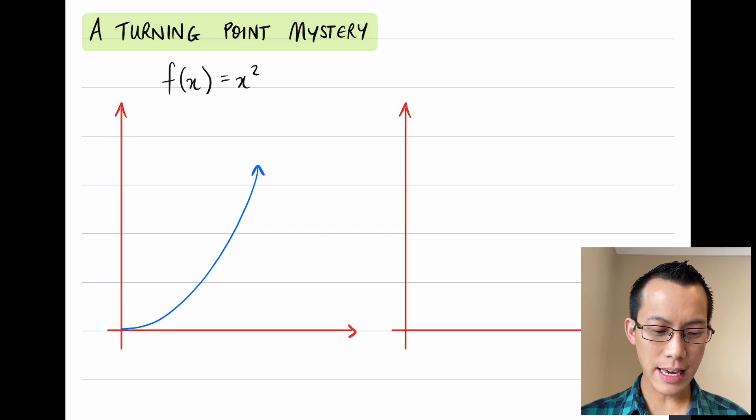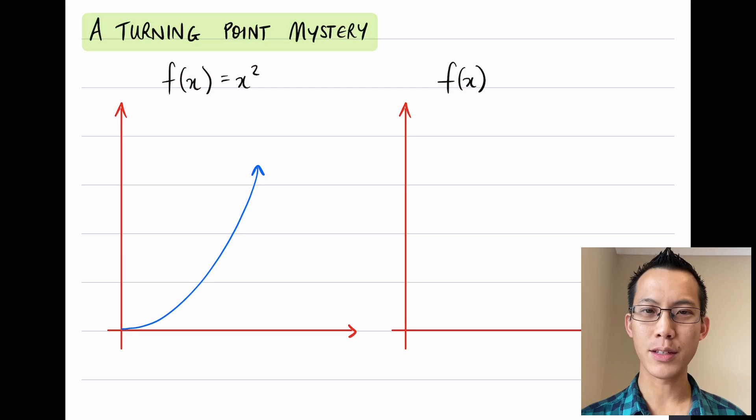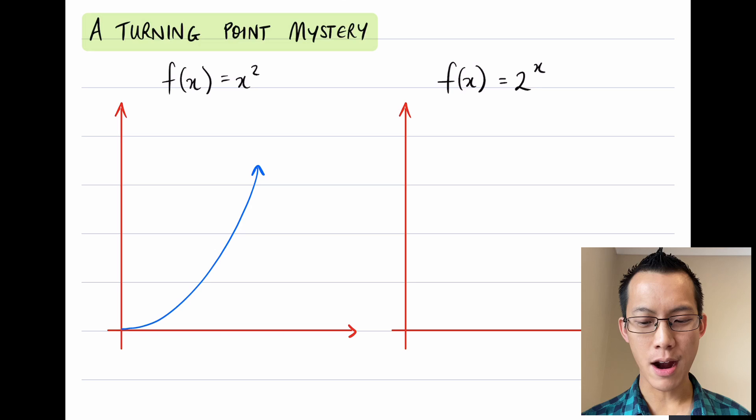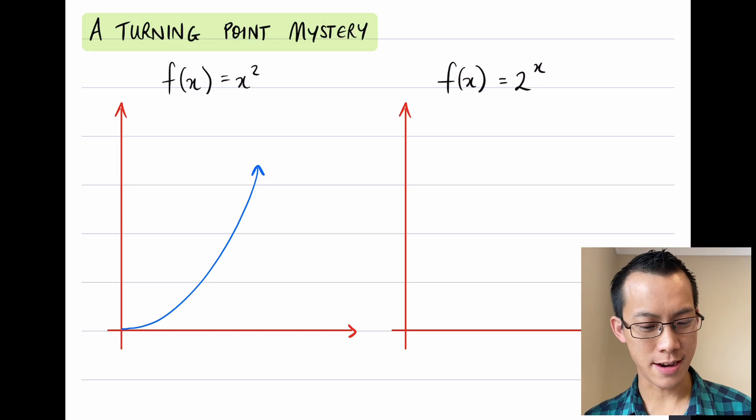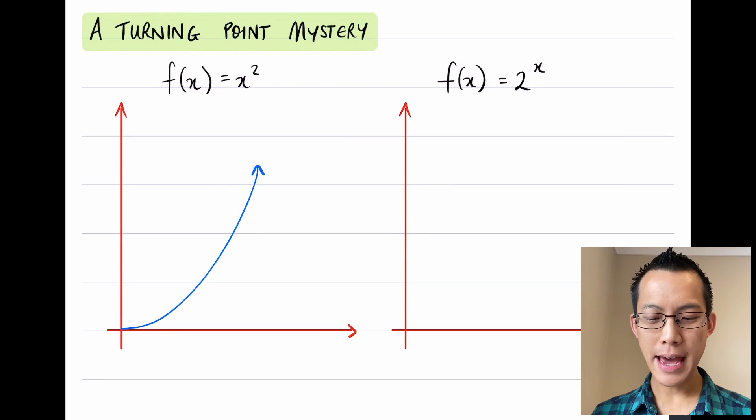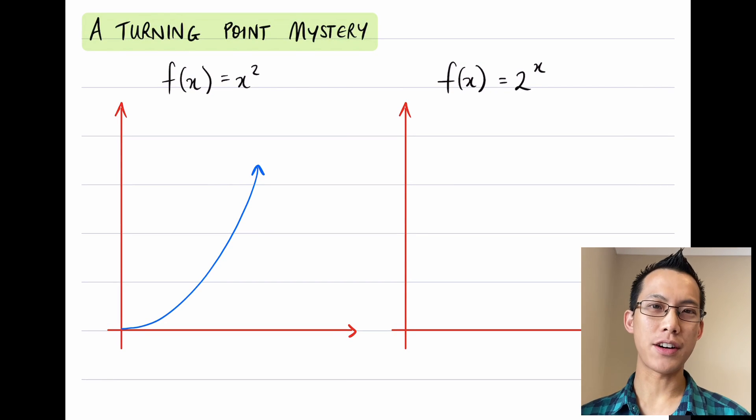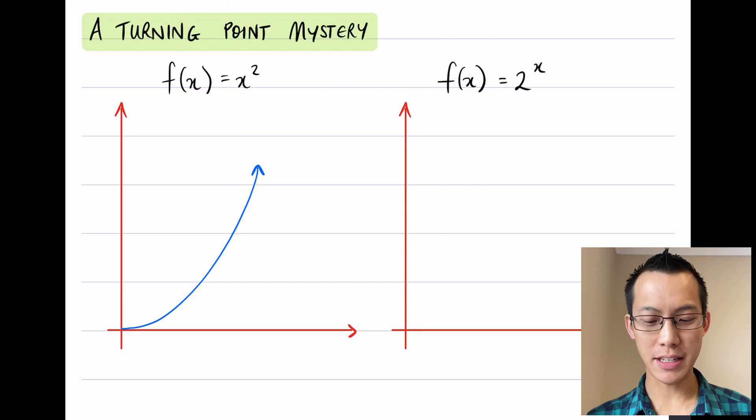So this f(x) = x² is familiar to us, and I want to compare that to a very similar looking function that has all the same pieces—we're just going to arrange them differently—and that is 2 to the power of x. If I swap the x and the 2, take the number out of the index and make it the base, we get an exponential function.